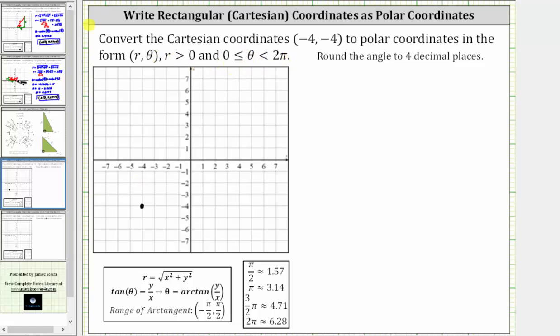Using the given conditions, r is the distance from the pole to the point and therefore the length of this segment here is r. And then theta is the angle starting along the positive x axis